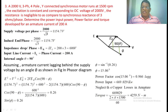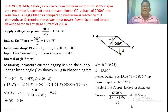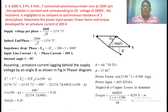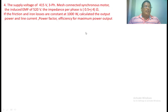Neglecting the copper losses in the armature, the input power equals the output power. So the torque equals output power divided by (2π × ns / 60), giving 4259 newton meters.